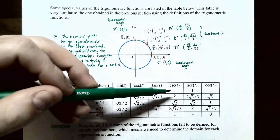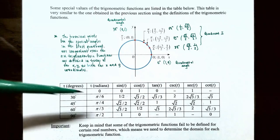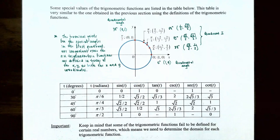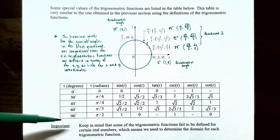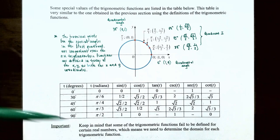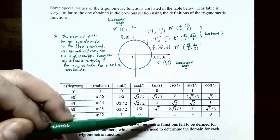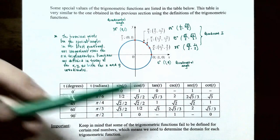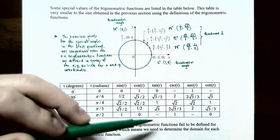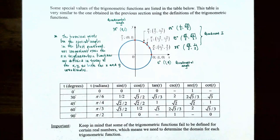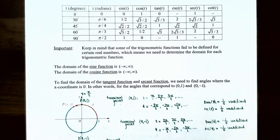Notice that some trigonometric functions are undefined for certain values of T due to division by zero. Cosecant and cotangent are undefined when T = 0 because the y-coordinate is 0. Tangent and secant are undefined when T = pi/2 because the x-coordinate is 0. Make sure you know these special angle values for all six trigonometric functions.